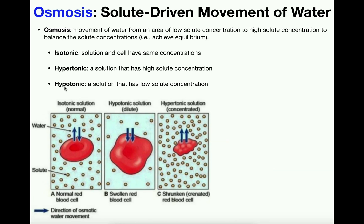Hypotonic — hypo means below or low. So this would be a solution outside the cell that has a low solute concentration. We see that in the middle picture here. We assume that the solute concentration in the solution outside the cell is low, and actually higher inside the cell. These three terms refer to the solution outside of the cell.